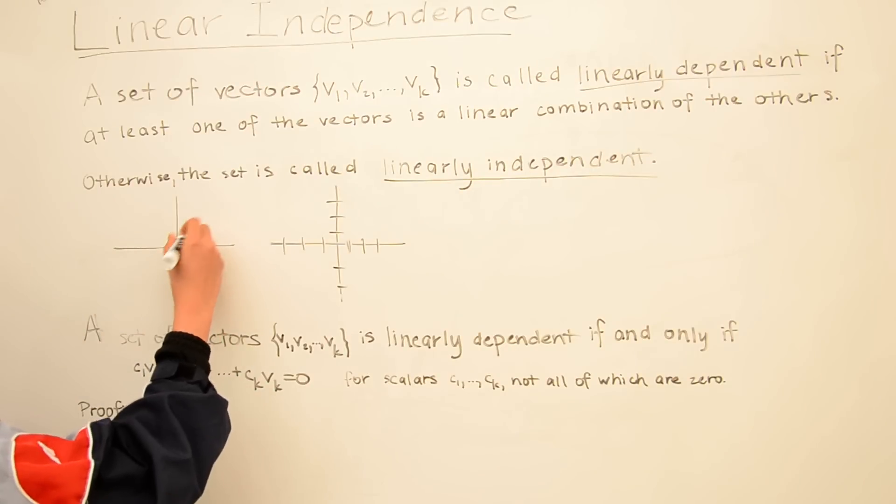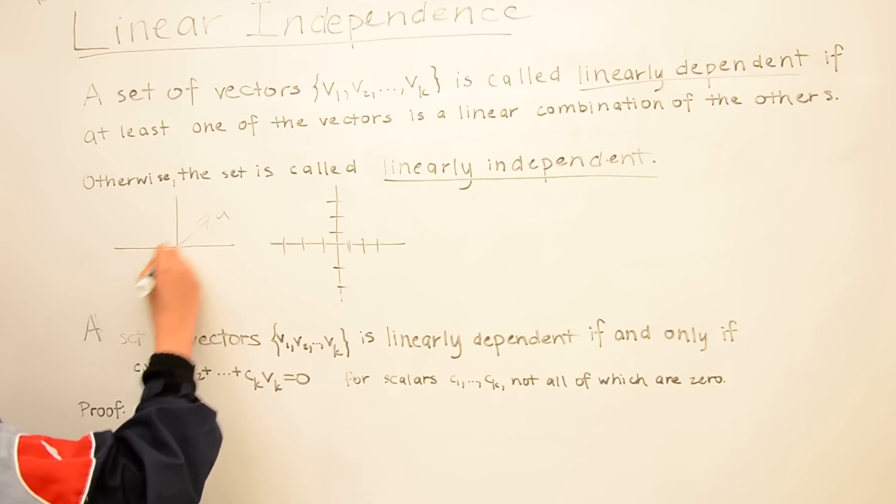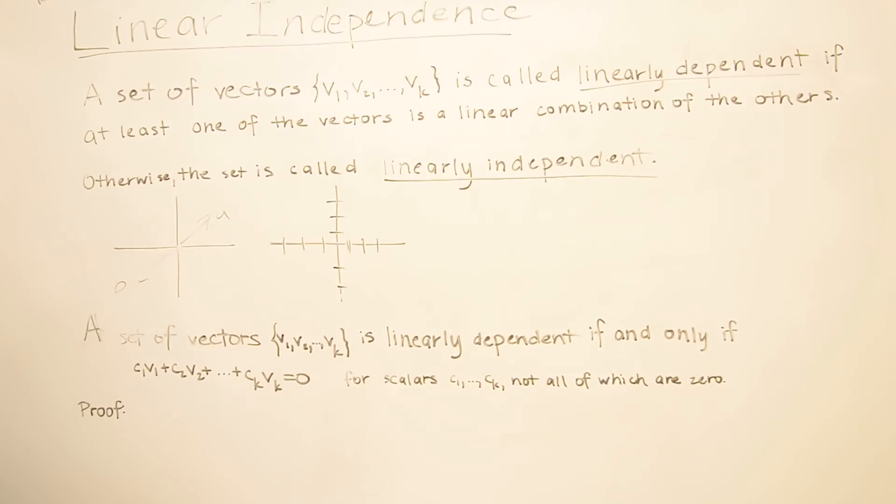So geometrically, say we have a vector a and a vector b that are collinear or scalar multiples of each other, then they're linearly dependent because they're linear combinations of each other.